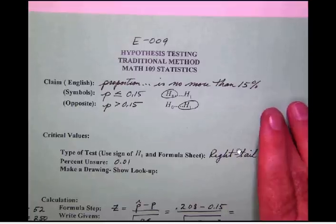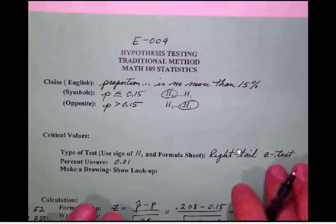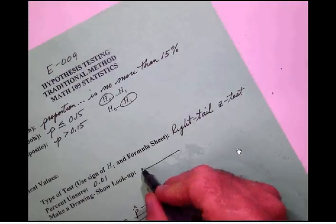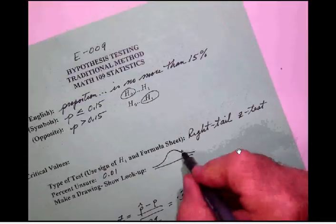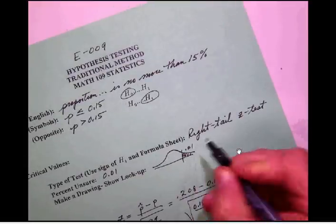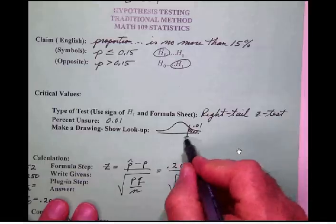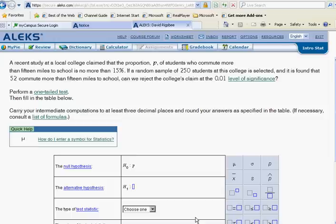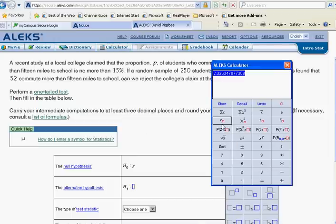So this is a right tail z test with a percent unsure of 0.01. Let's make a drawing and show the lookup for that. We'll draw out our normal curve. It's a right tail test, so all of the area that we are unsure of is over here on the right hand side. We're interested in this z value right here, our critical value for z.